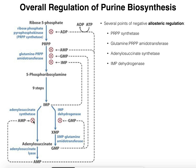Let's consider the two end products of this pathway: AMP and GMP. One thing cells like to do is balance the amount of purines they have. You have two major purines — adenine and guanine — and the cell wants to balance the A's and G's as much as possible. If you have way too many A's, you need to stop making A's and make more G's. And vice versa — if you've got enough G's, stop making G's and make more A's.